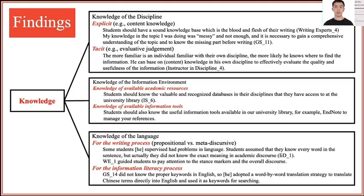Three types of knowledge were identified. The first is knowledge of the discipline, and this type has two subcategories: explicit knowledge, which includes, for example, content knowledge, and tacit knowledge, which includes, for example, evaluative judgments of appropriate information sources and good writing.